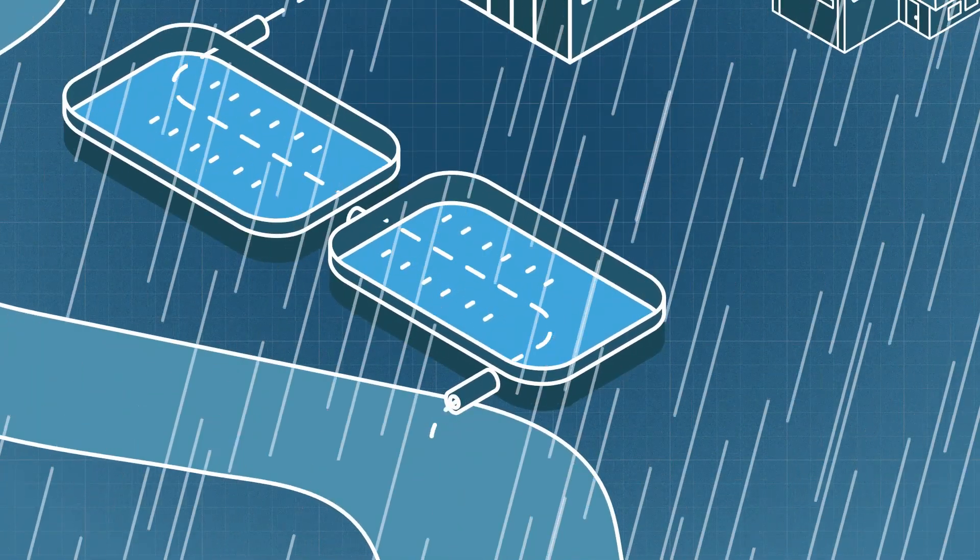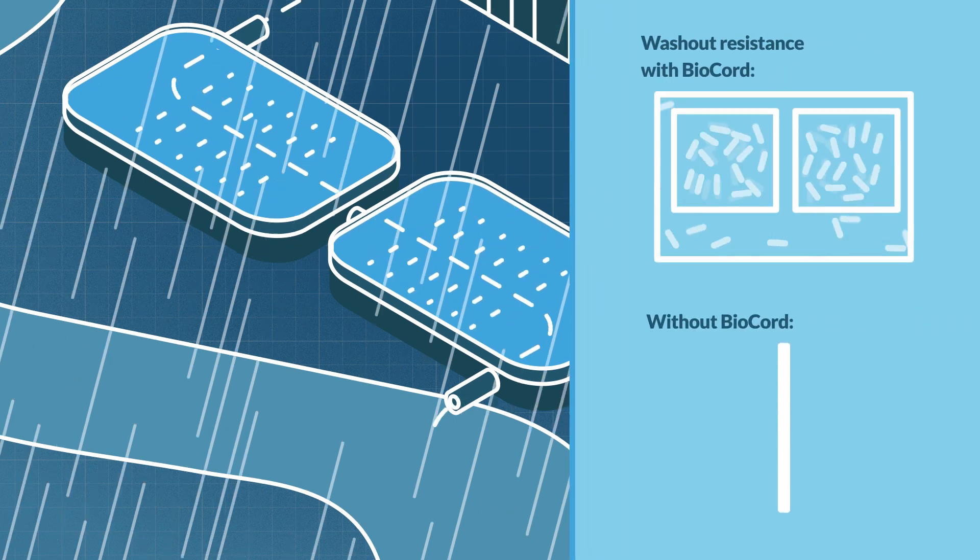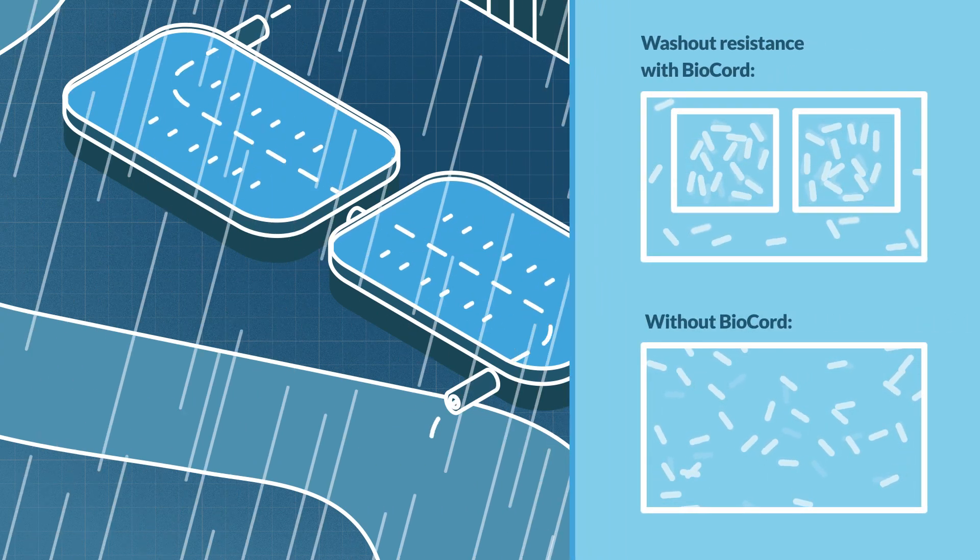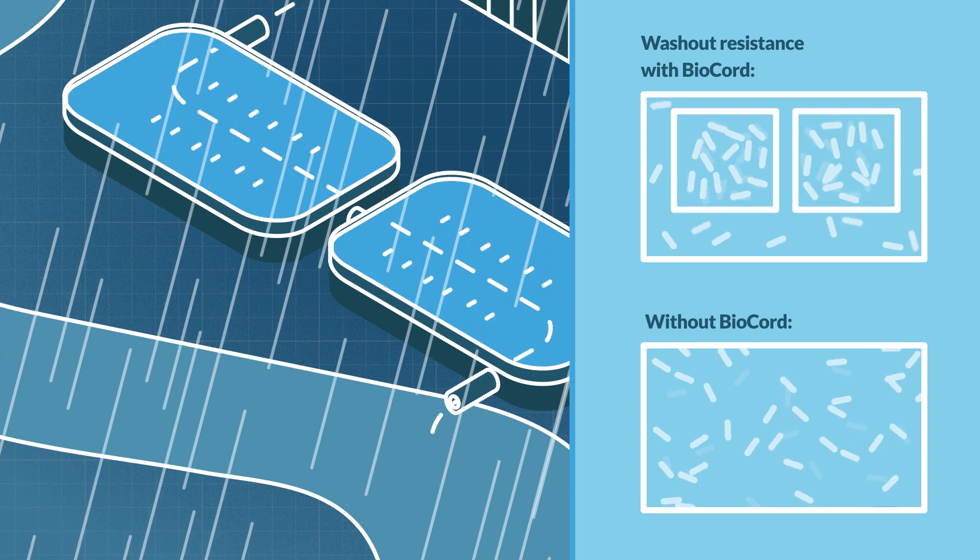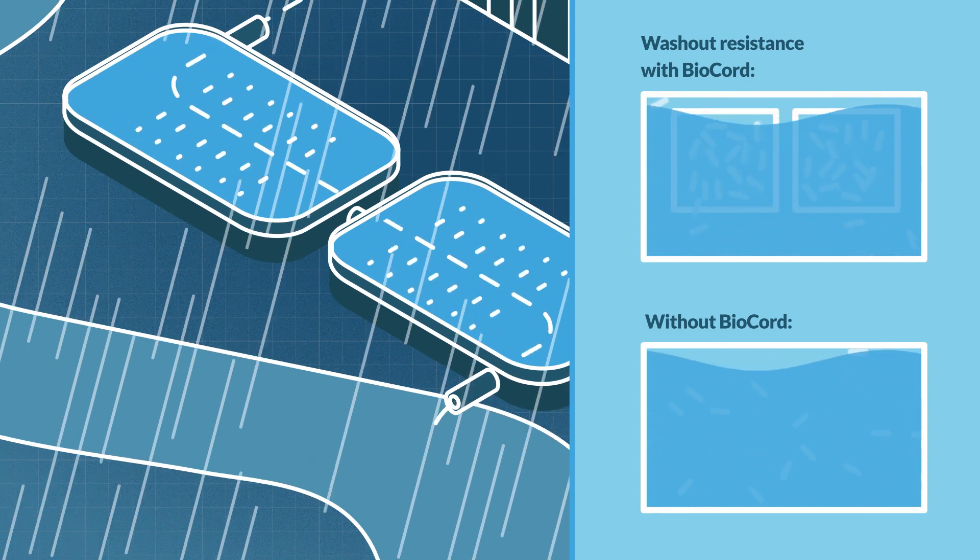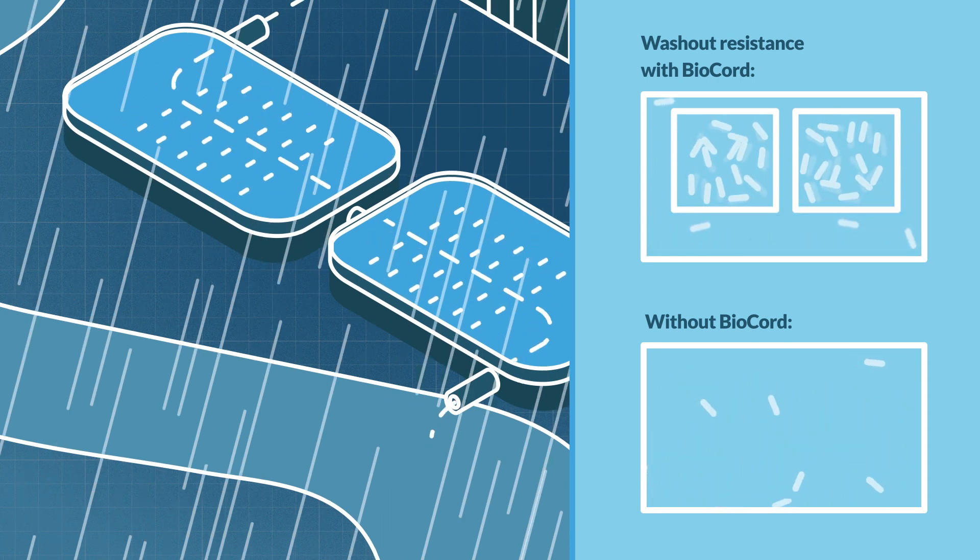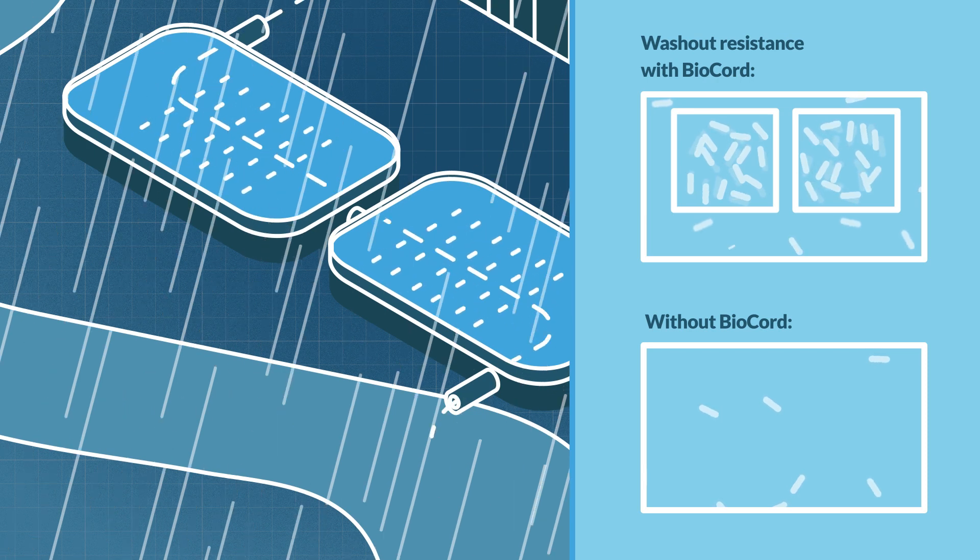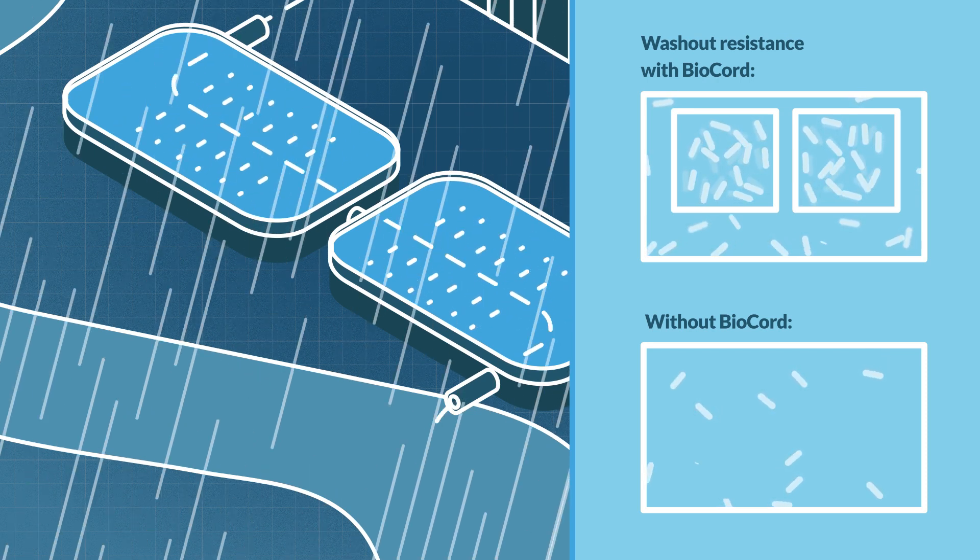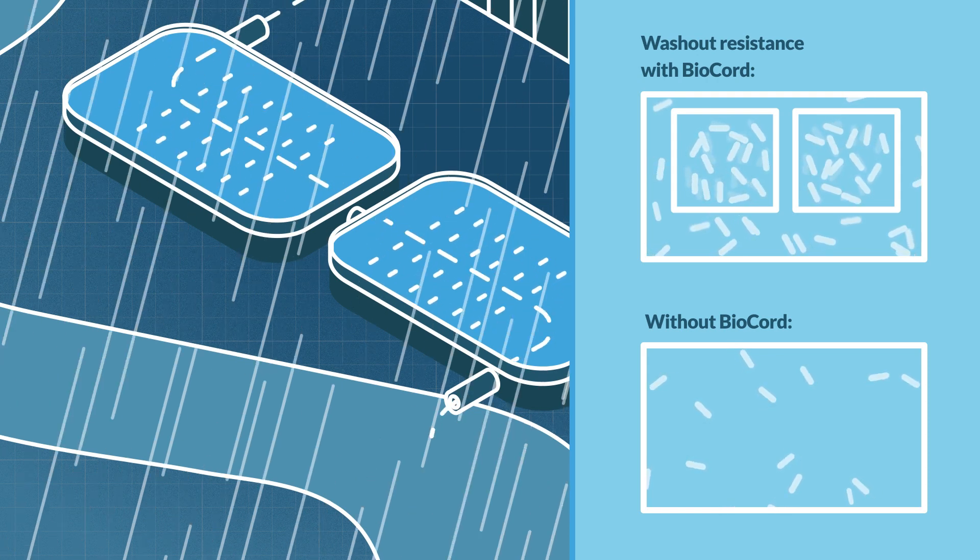Biocord also helps treatment plants to resist washout, a condition where high hydraulic loading during periods of peak flow or wet weather causes microbes in ordinary activated sludge plants to be flushed out of treatment cells. Since biocord's biofilm is attached to the growth media, it remains in the system to continue providing treatment and helps reestablish the population of suspended bacteria to optimum levels.